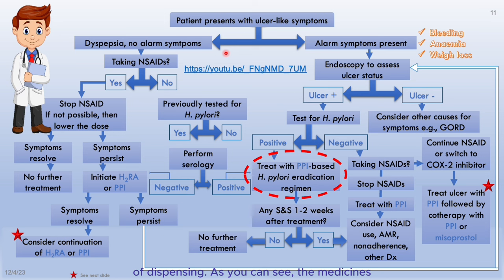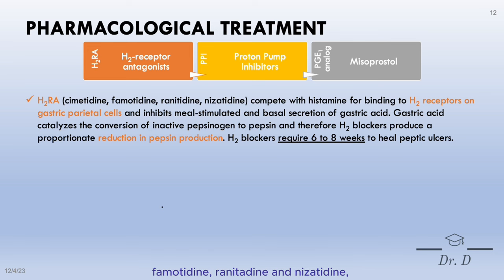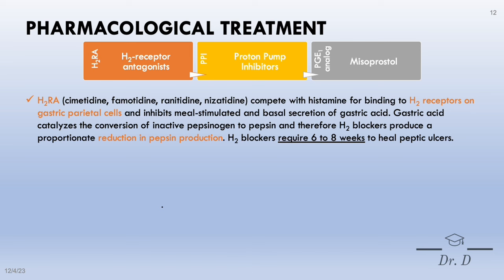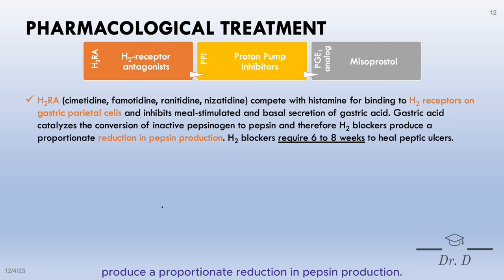Medicines included in the stepwise treatment plan include H2 receptor antagonists, proton pump inhibitors, and misoprostol. H2 receptor antagonists — for instance, cimetidine, famotidine, ranitidine, and nizatidine — compete with histamine for binding to H2 receptors on gastric parietal cells and inhibit meal-stimulated and basal secretion of gastric acid. Gastric acid catalyzes the conversion of inactive pepsinogen to pepsin, so H2 blockers produce a proportionate reduction in pepsin production. H2 blockers require six to eight weeks to heal peptic ulcers.